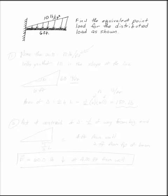Find the equivalent point load for the distributed load as shown. The first thing is to be very careful. Note what your units are. We've got 10 pounds per foot squared.